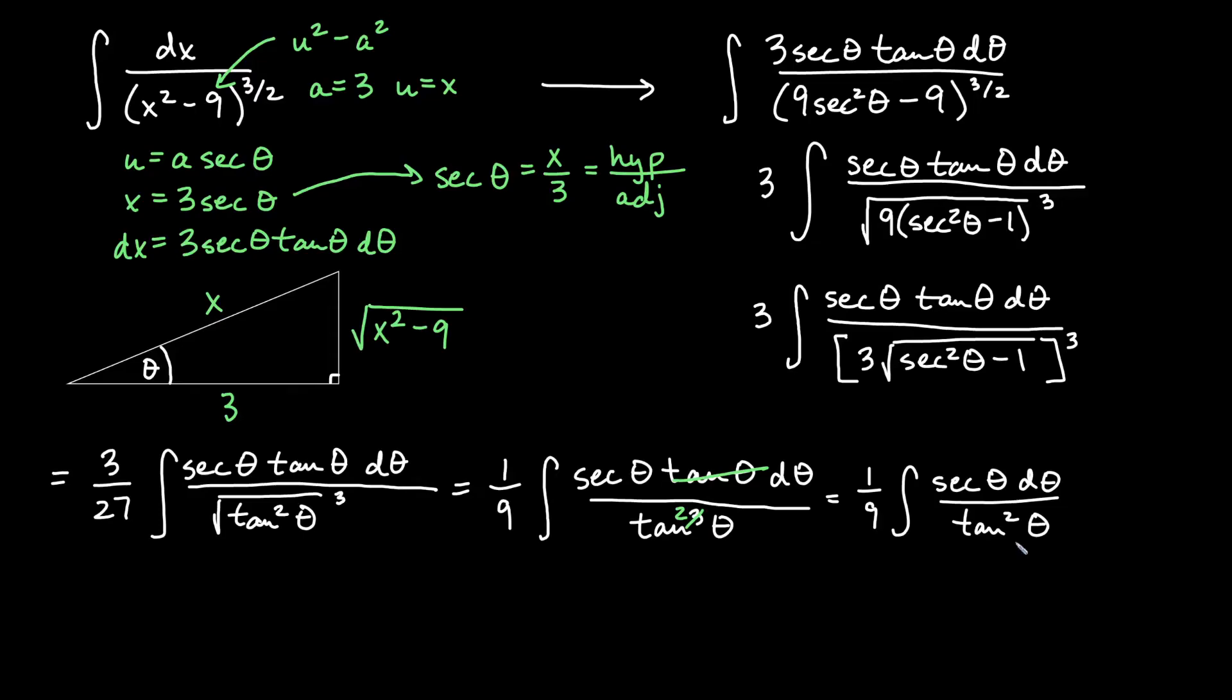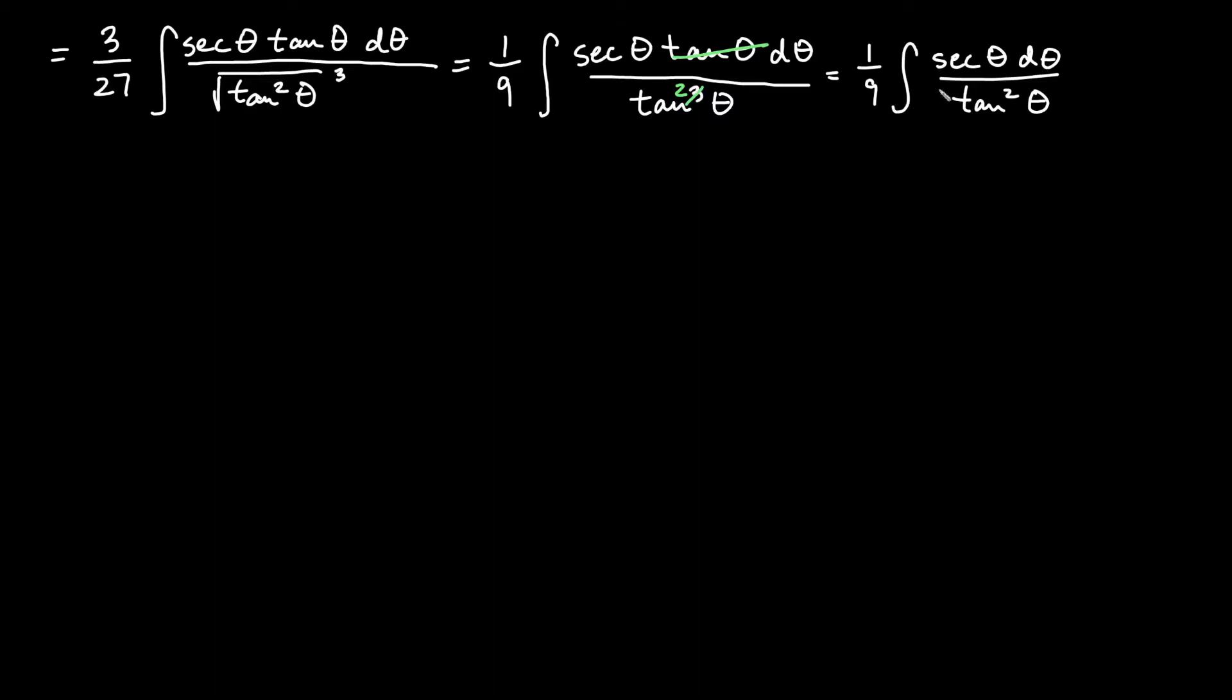In its current form, there's no really good way to do this with u substitution. If I break the bottom into secant squared minus 1, I can't split a denominator like I can split a numerator. So here we'll just try converting everything to sines and cosines and see what we get. So we get 1 over 9. And we get the antiderivative of 1 over cosine theta d theta on top and on the bottom. Tangent squared theta would be sine squared theta over cosine squared theta.